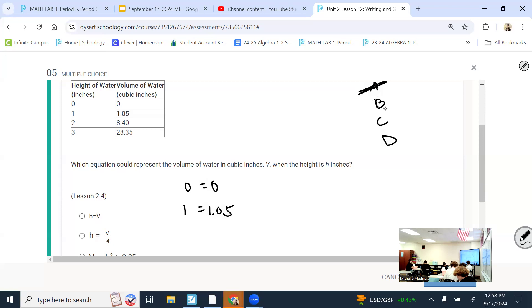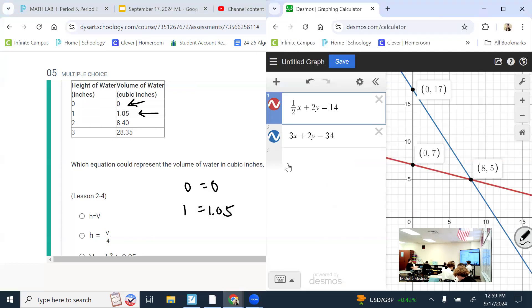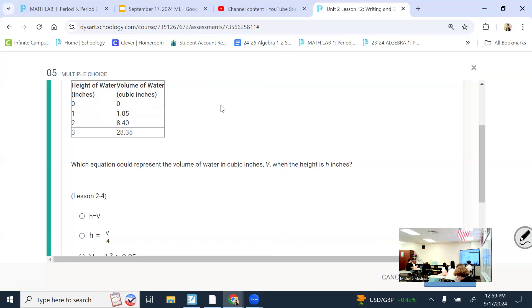Now try the next one. When I plug in zero for the h and zero for the v, is zero divided by four zero? Use a calculator if you need to. Yeah, okay, so that works so far. Now let me try plugging in this one. So then one for the h, 1.05 for the volume. I don't think that's going to be accurate, but let me just see. 1.05 divided by four is not one. So we're also not picking the second one.